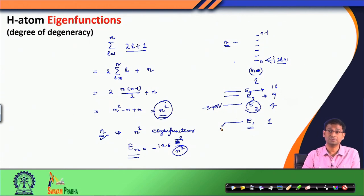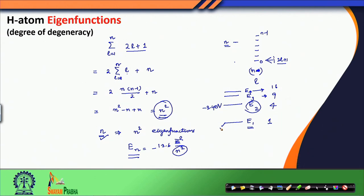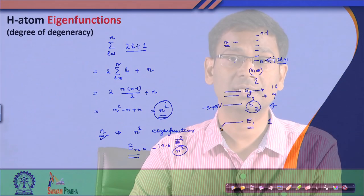We still do not know the functional forms of these eigenfunctions, and that is what we will discuss in our next class. In today's class we conclude here, having discussed the hydrogen atom's energy levels and the hydrogen atom's emission spectrum. We will continue our discussion on the eigenfunctions of hydrogen atom in our next class. Thank you for your attention.